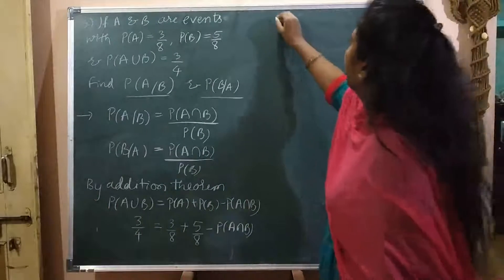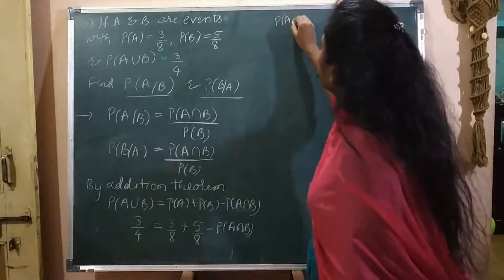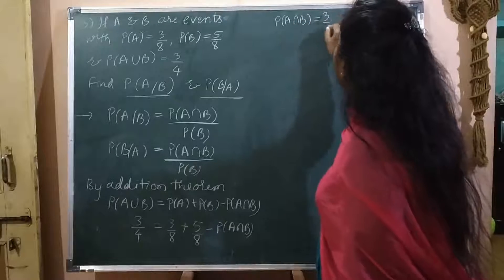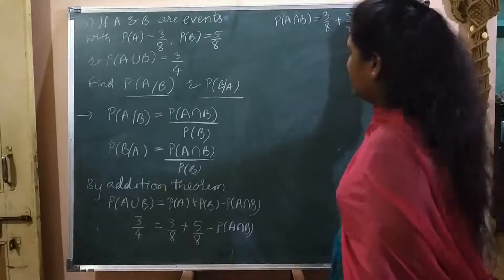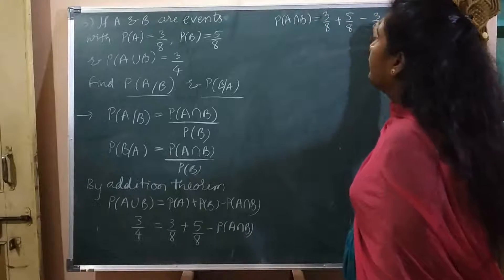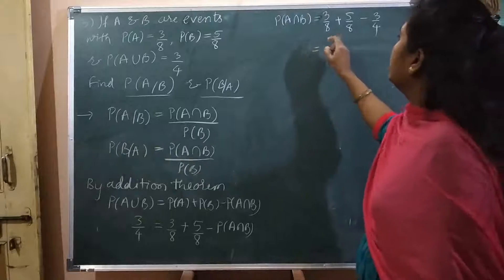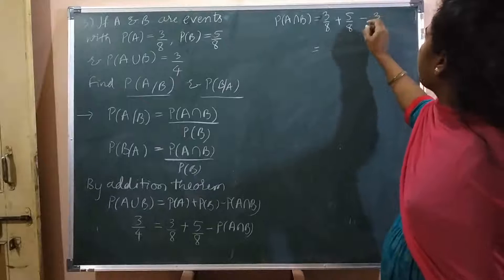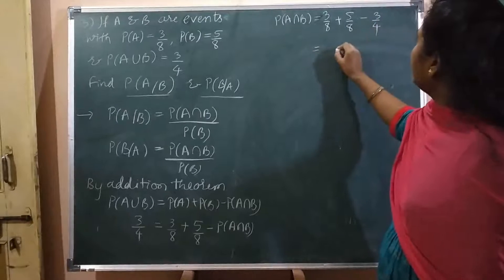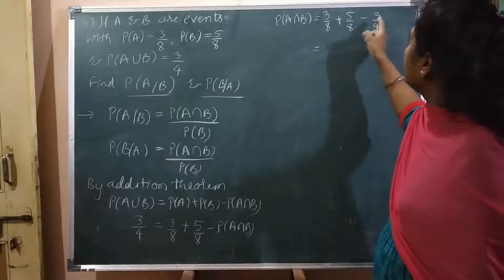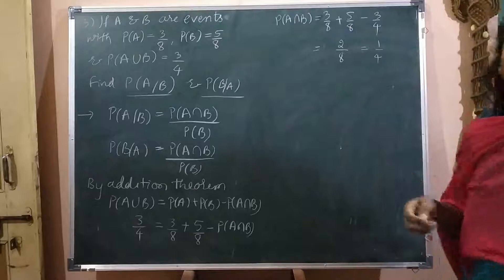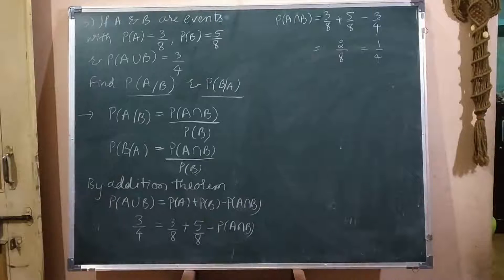Transferring P of A intersection B to the LHS and taking 3 by 4 to the RHS, we get 3 by 8 plus 5 by 8 minus 3 by 4, which gives 2 by 8, that is 1 by 4. So P of A intersection B equals 1 by 4.